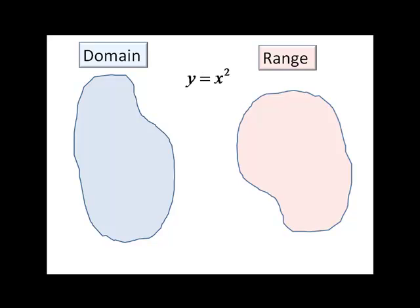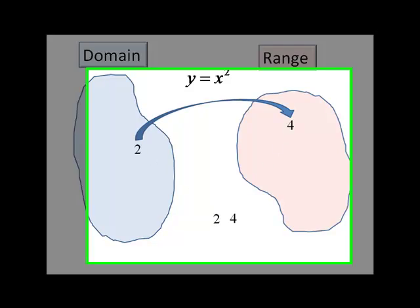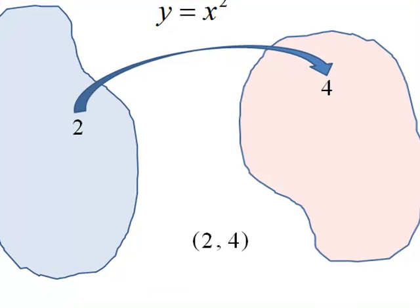Let's take a specific example. Let's say we had y equals x squared, and that 2 is in our domain. Then our function will map 2 to 4, which is in our range. Another way of representing this is as an ordered pair (2, 4).